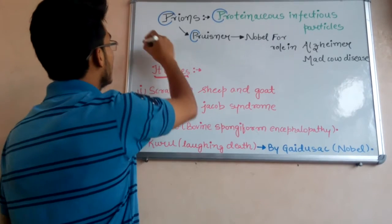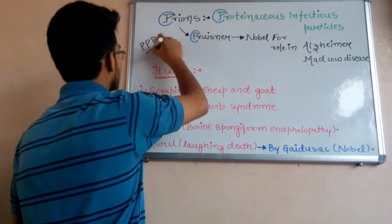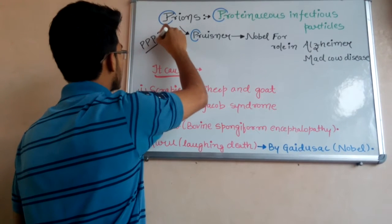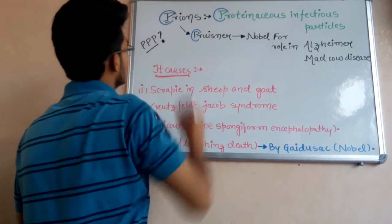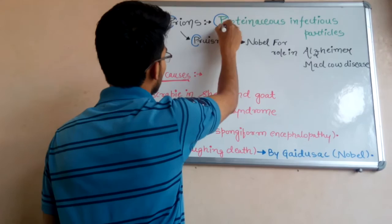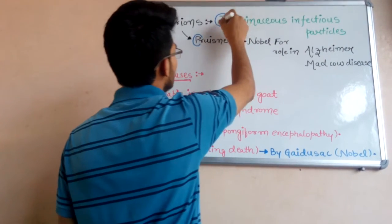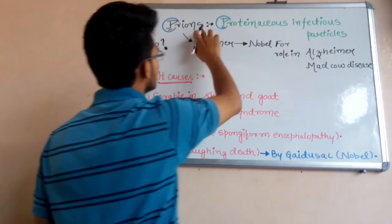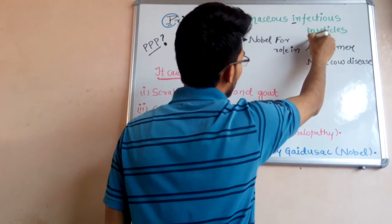So firstly, we have to remember triple P. What does this triple P mean? P means prions, which is the name of the topic. So what are prions? Prions are proteinaceous infectious particles. The second P means proteinaceous. Prions are the proteinaceous infectious particles because they are causing diseases.